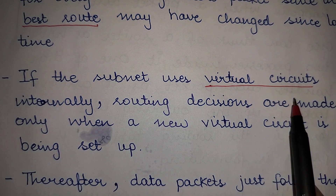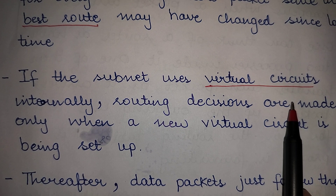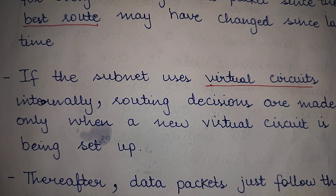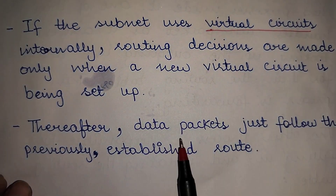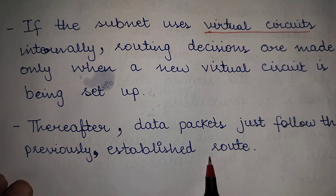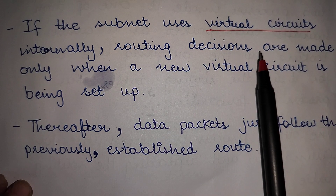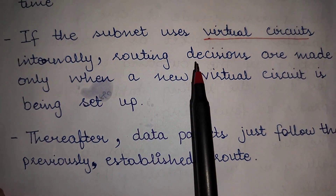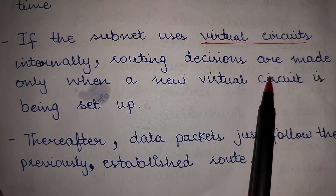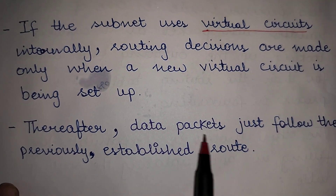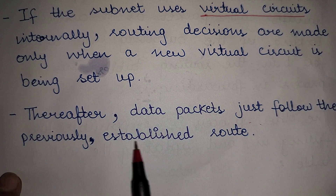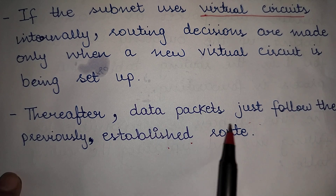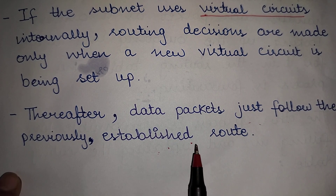Virtual circuits are used when it is a connection-oriented service, wherein a dedicated path is established for the entire connection. Thereafter, data packets just follow the previously established route. Once a path has been chosen — meaning a routing decision has been made at the time of connection establishment — all data packets would follow that same previously established route.